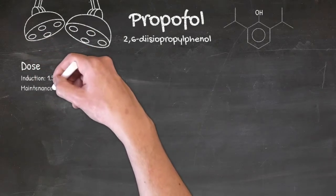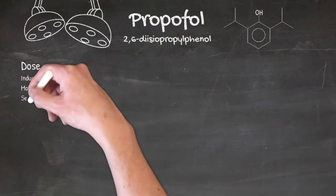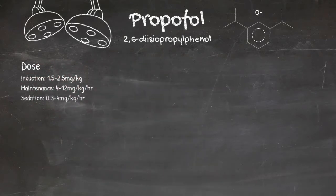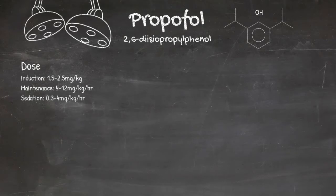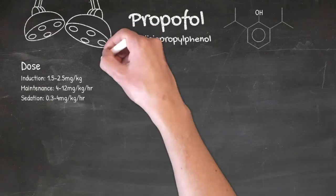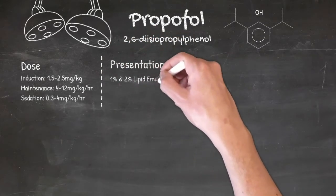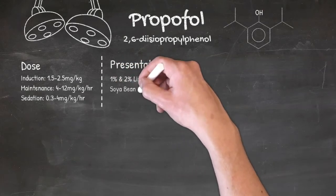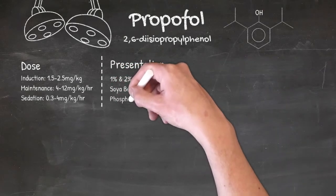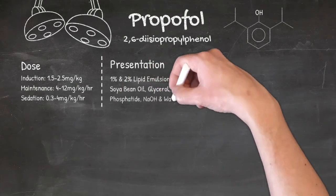The dose of propofol depends on what you're using it for. A standard induction dose is 1.5 to 2.5 milligrams per kilo. For maintenance of anaesthesia as an infusion it's 4 to 12 milligrams per kilo per hour, or for sedation 0.3 to 4. Propofol is presented as either a 1% or 2% lipid emulsion. In the anaesthetic room you'll almost always use 1%, which normally comes in a 20 ml vial — that's 200 milligrams per vial.